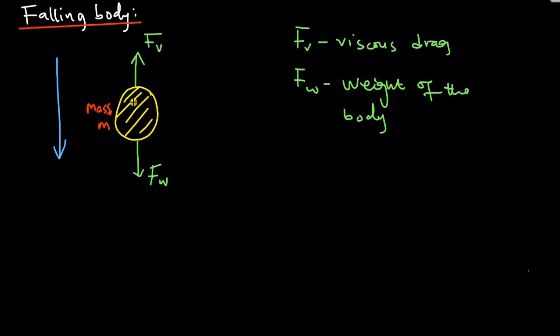So for any falling body, there are two forces predominantly acting on it. The viscous drag on the object due to air resistance, and the weight of the body because it has mass.